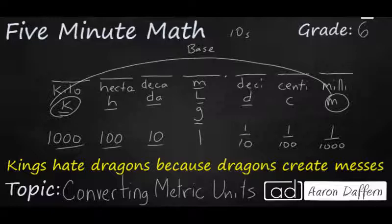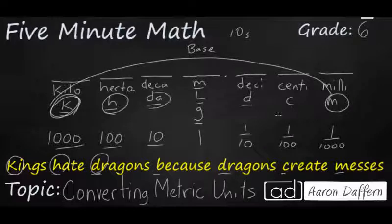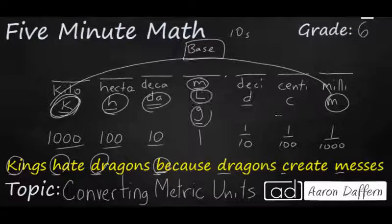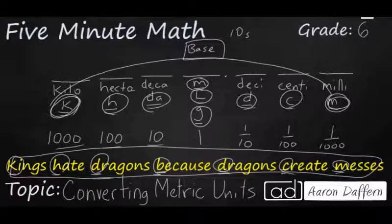To keep these prefixes in order, we have a mnemonic on the screen: "Kings hate dragons because dragons create messes." The first letter of each word represents a prefix: K for kilo, H for hecto, D for deca, B for base (meter, liter, or gram), then D for deci, C for centi, and M for milli. When converting units, set up this place value chart using the phrase, and it's really easy to change units.